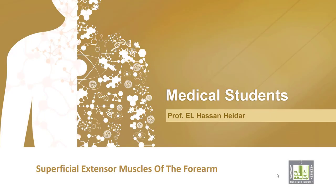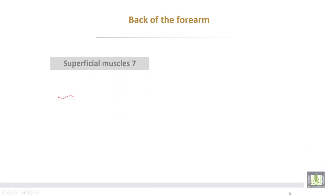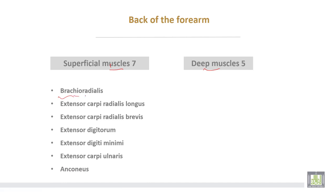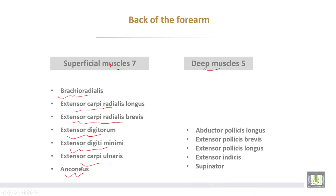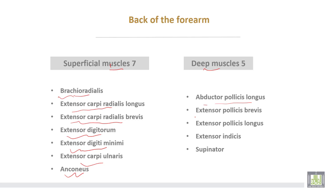Extensor muscles of the forearm are two groups: superficial and deep. The superficial group is formed by seven muscles, while the deep group is formed by five muscles. The superficial group are: brachioradialis, extensor carpi radialis longus, extensor carpi radialis brevis, extensor digitorum, extensor digiti minimi, extensor carpi ulnaris, and anconeus muscle. The deep muscles are abductor pollicis longus, extensor pollicis brevis, extensor pollicis longus, extensor indicis, and supinator muscles.